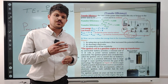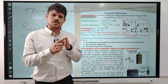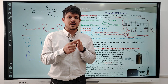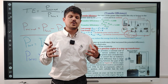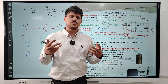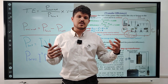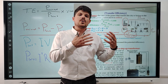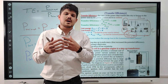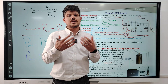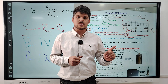The resistance of the wire depends on four factors. The first one is the length of the wire, and this relation is directly proportional. For example, of two wires with the same material but different lengths, the wire with greater length has more resistance because resistance is directly proportional to length.